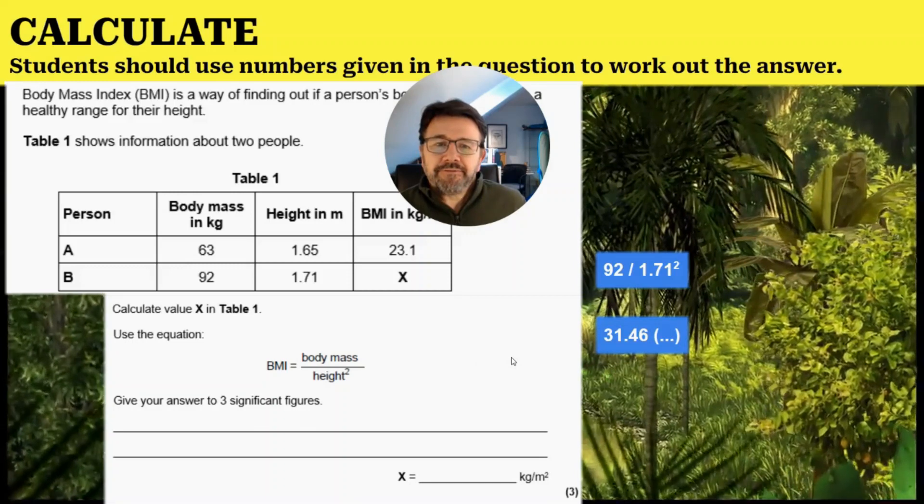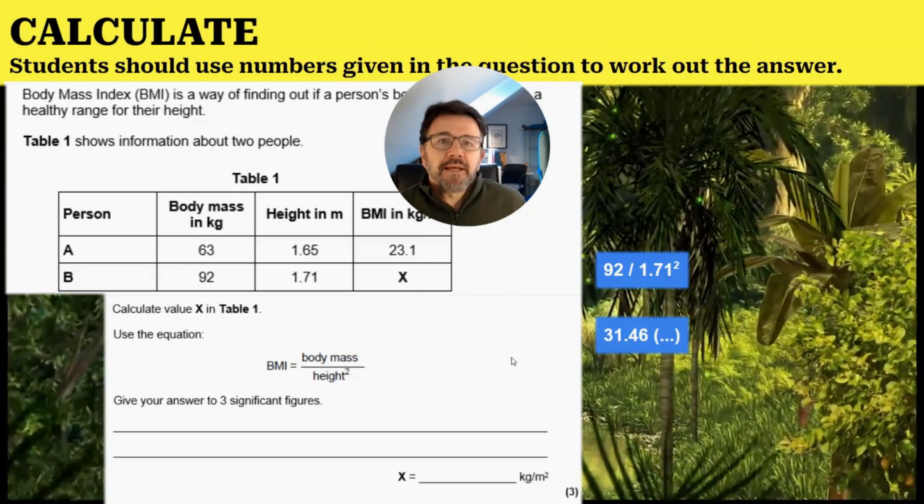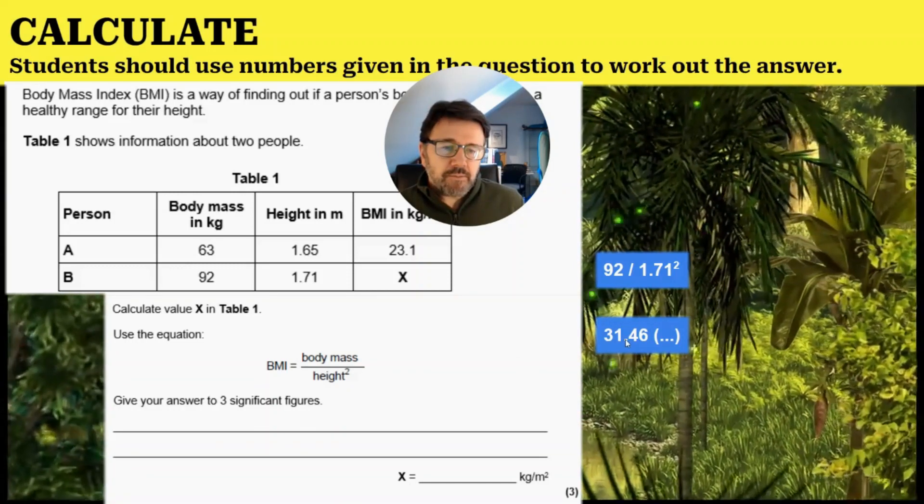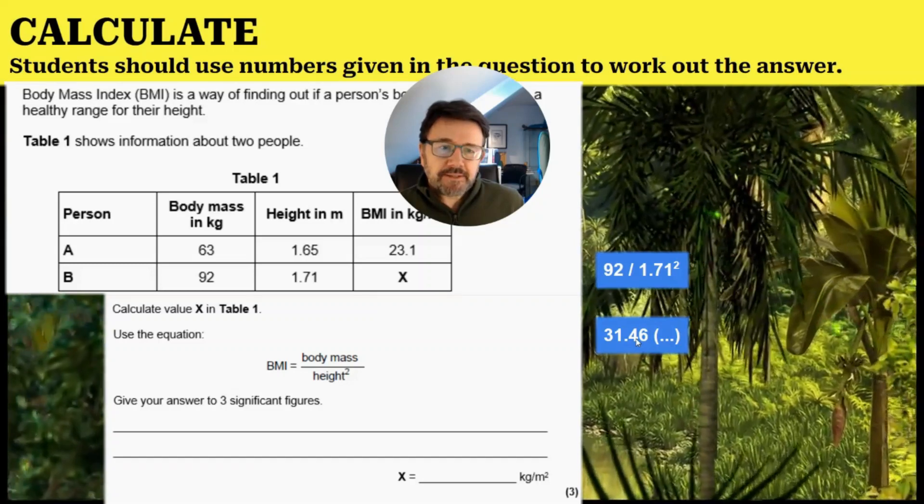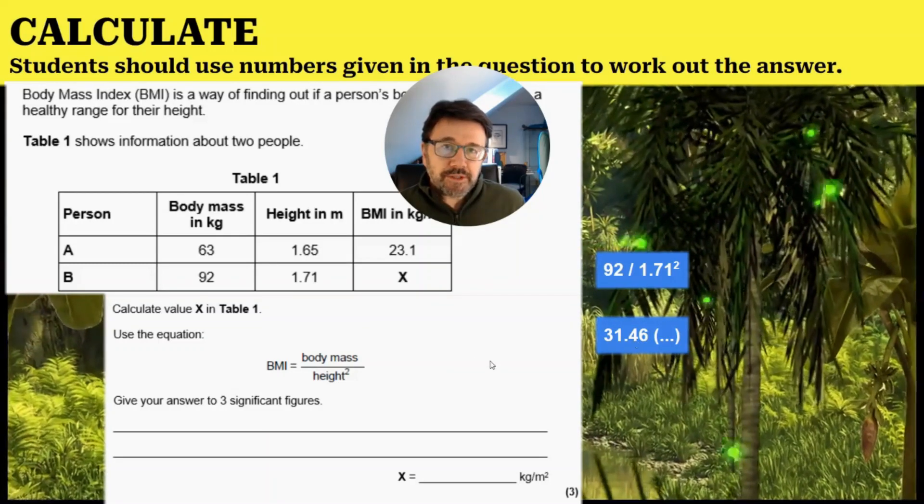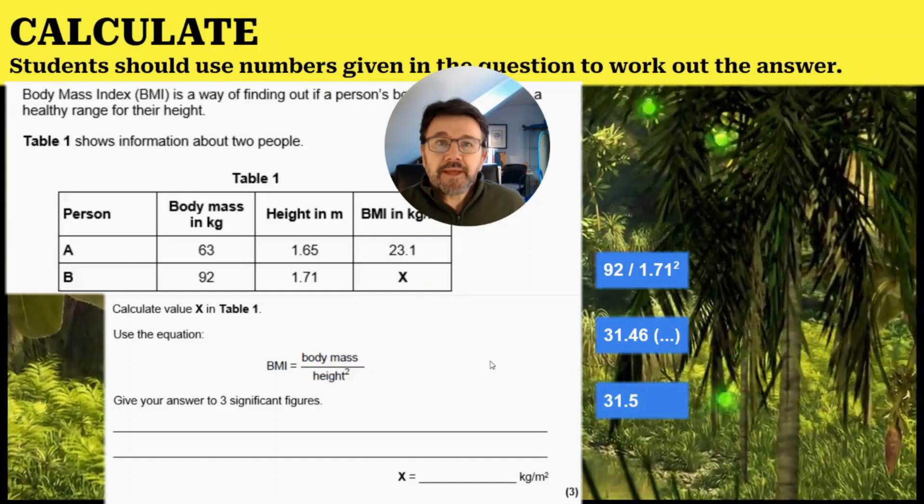It says three significant figures, so to convert it: it will be three, one, point, and the nearest. It's four six, so it must be 31.5, and there we have the answer.